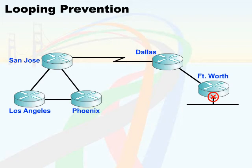Let's look at how these solutions would fit into our example. When we look at packets traversing the network between Los Angeles and Fort Worth and we reach a count to infinity, the packet eventually dies out based upon the maximum hop count. The maximum hop count for RIP, in our example, is 15. This means that a packet can cross 15 routers before it reaches unreachable — 16 is considered unreachable.